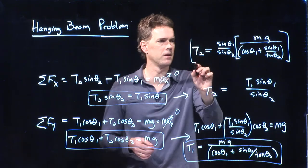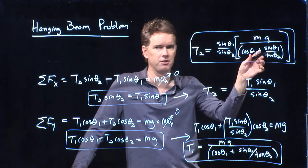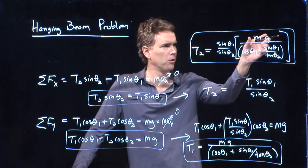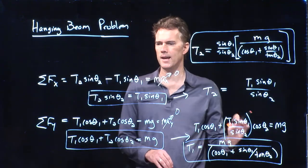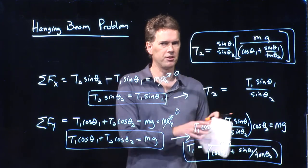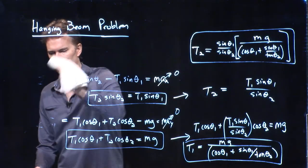Remember — when you do these problems, keep your variables all the way to the end because that lets you check your work. We can check the units pretty easily: mg is a force, and all the sines, cosines, and tangents are unitless, so the result is in Newtons — good. Now let's take a look at a limit, which is perhaps a little more difficult to see, but I'm sure you know the answer already.